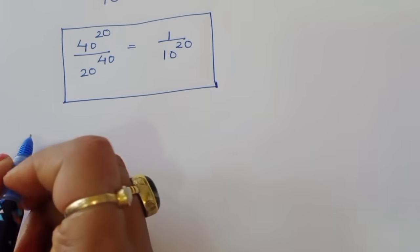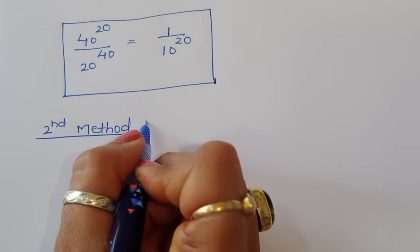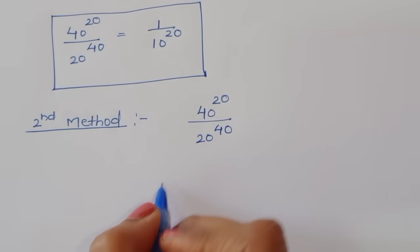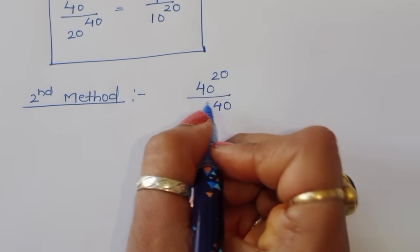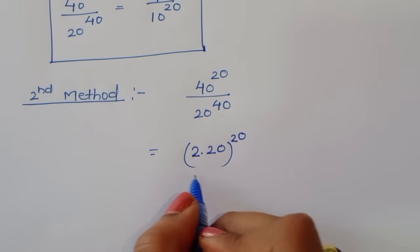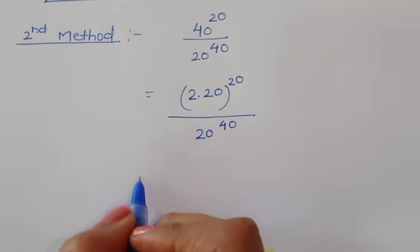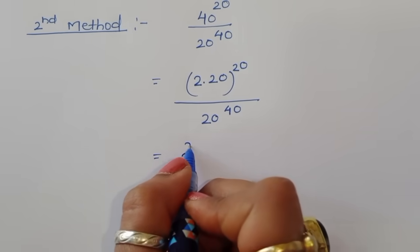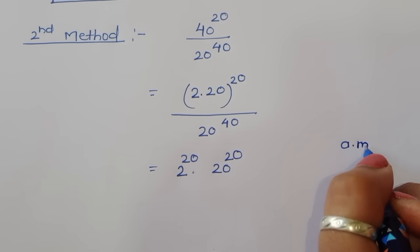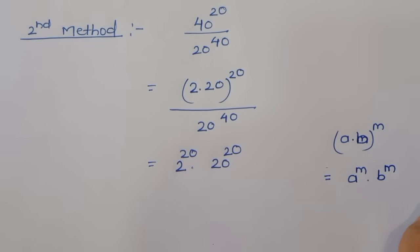Now we use the second method to solve this. We have 40 power 20 divided by 20 power 40. We write 40 as 2 times 20, so the numerator becomes (2 times 20) power 20. Using the formula (a times b) power m equals a power m times b power m, this gives 2 power 20 times 20 power 20 in the numerator.